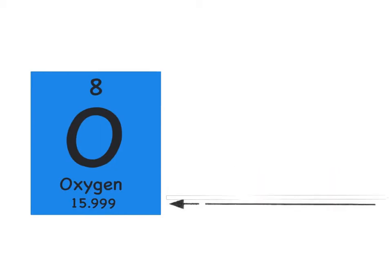Last but not least, within the information provided in the periodic table is the atomic mass of each element. The atomic mass is really important because it represents how many protons and neutrons make up the atom for oxygen. Remember, protons and neutrons are only found in the nucleus. So please write 'atomic mass' on the fourth line.